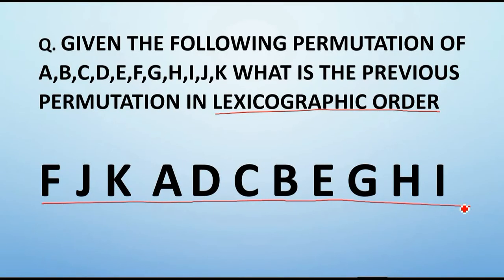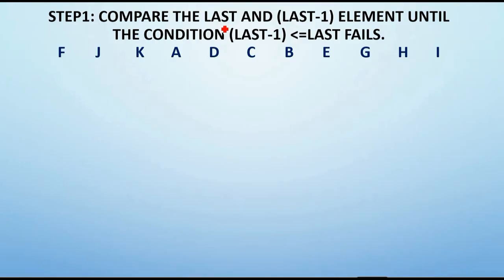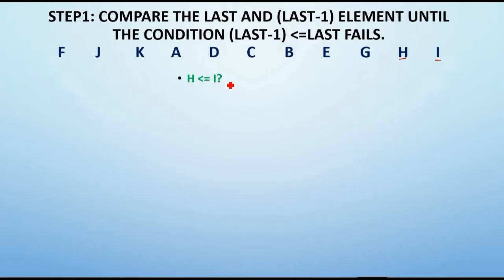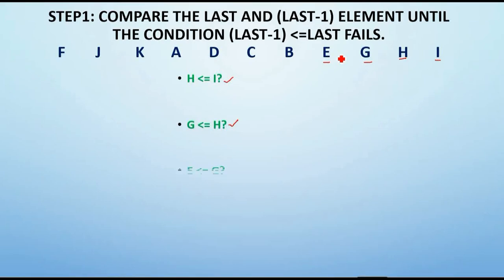Let's get started with Step 1. We compare the last and last-1 element until the condition last-1 less than or equal to last fails. So we keep on checking this condition. Once this condition fails, we stop. In the pattern I have considered, the last-1 element is H and the last element is I. I check whether H ≤ I — true. So I move to the next element G. I check whether G ≤ H — true. I move to the next element E. E ≤ G — true. So I move to the next element B.